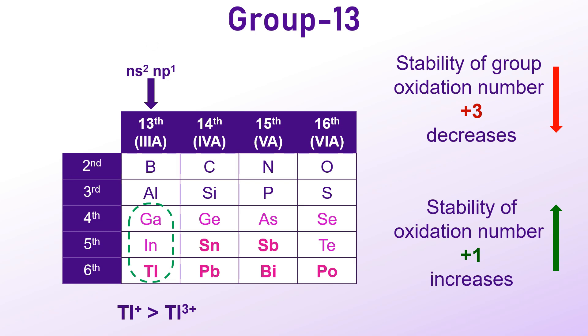In thallium, the pair of electrons in the outermost NS orbital tends to remain non-bonding and does not participate in the bond formation, a phenomenon known as the inert pair effect.